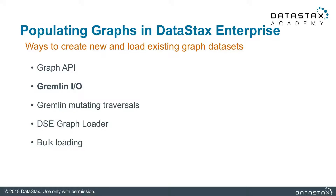Gremlin mutating traversals are more suitable for mutating existing graphs. The Graph Loader utility is capable of parsing existing collections of text files and datasets stored in JDBC-compatible databases, loading such data as graphs into DataStax Enterprise — good for small to medium-sized graphs. There is also a Spark-based bulk loading mechanism ideal for loading large graphs.